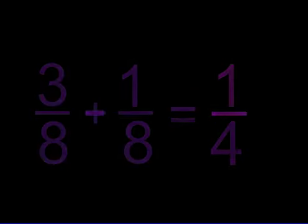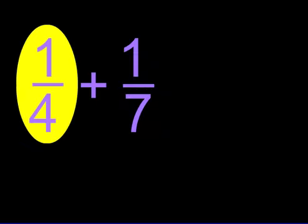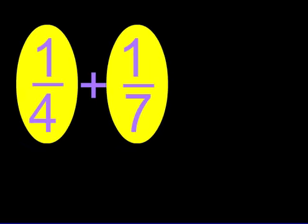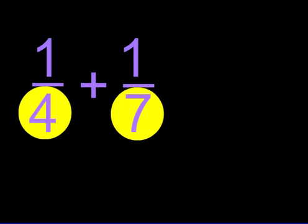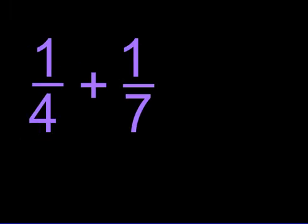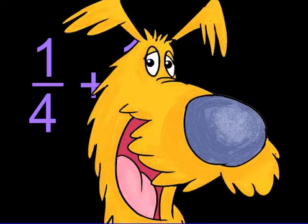Now let's see what happens when the denominators are different. Here we have one-fourth plus one-seventh. We cannot add the numerators because the denominators are different. However, there's a little math trick that makes it easy. Abracadabra.